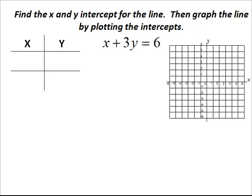We're asked to find the x and y intercept for the line given below. Then we're asked to graph the line by plotting the intercepts. We're given the equation x plus 3y equals 6.